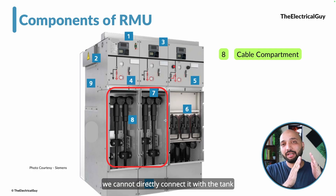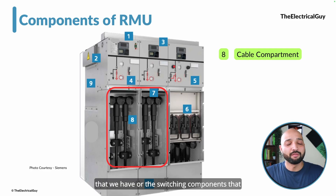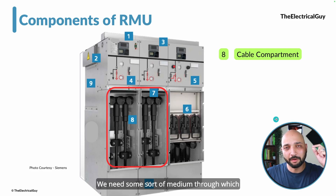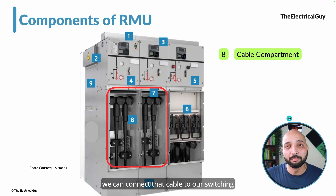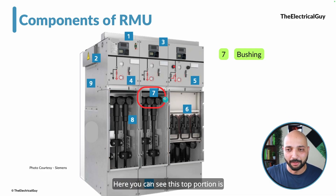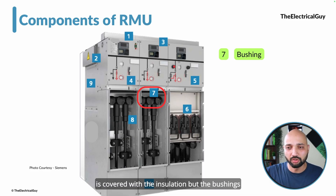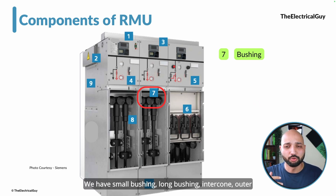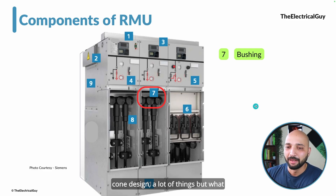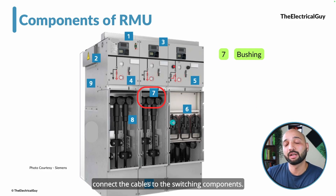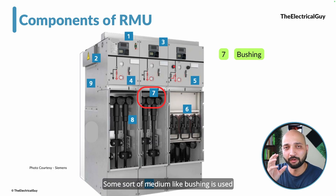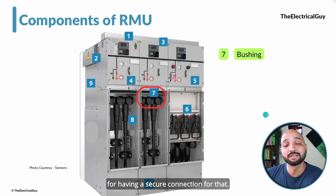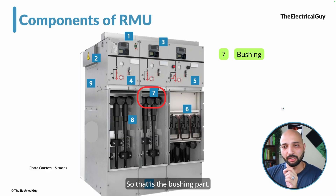When we enter the cable, we cannot directly connect it to the tank or the switching components. We need some medium through which we can connect the cable to our switching parts like circuit breakers or disconnectors. For that we use bushings. The top portion is nothing but the bushing, though it is covered with insulation. There are different types of bushings — small bushing, long bushing, intercone, outercone design. What you have to remember is you cannot directly connect cables to switching components; some medium like a bushing is used for a secure connection.